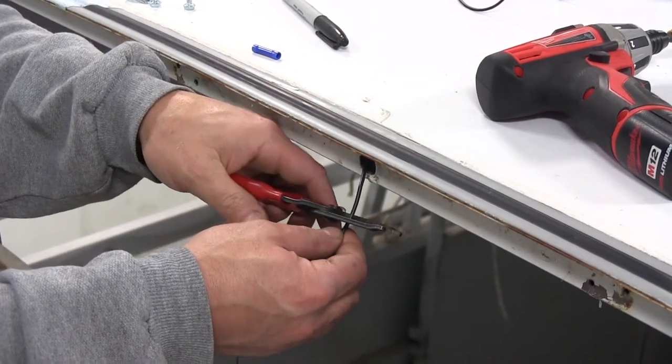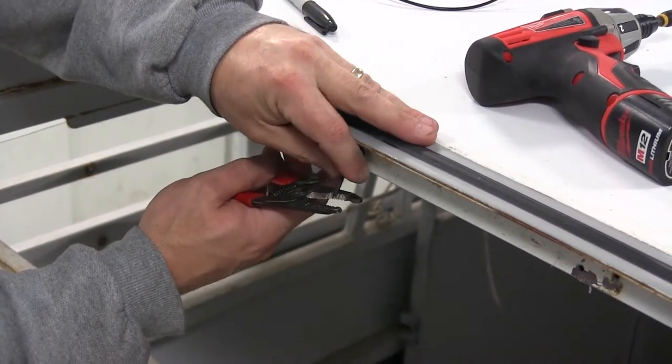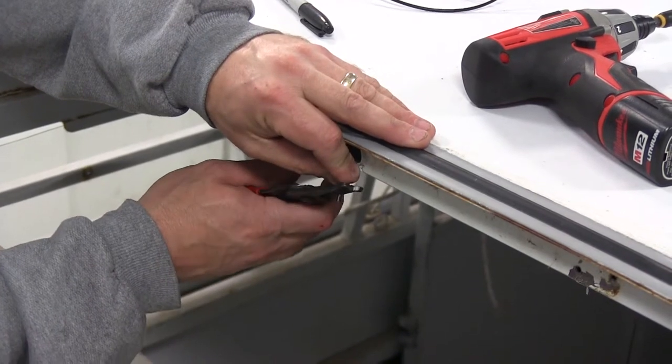Next we're going to need to trim down this wire a little bit, as well as the wire on the back of the light bar. We're then going to add a butt connector to connect the two wires.